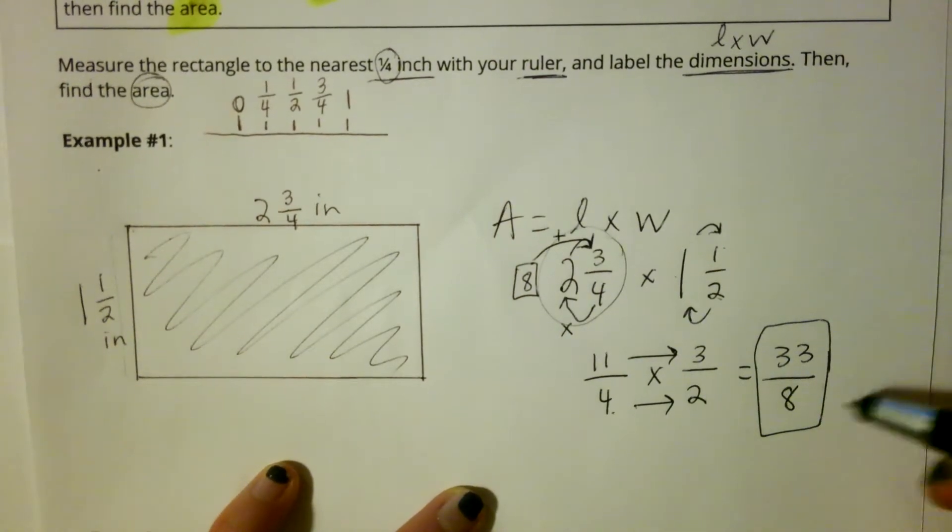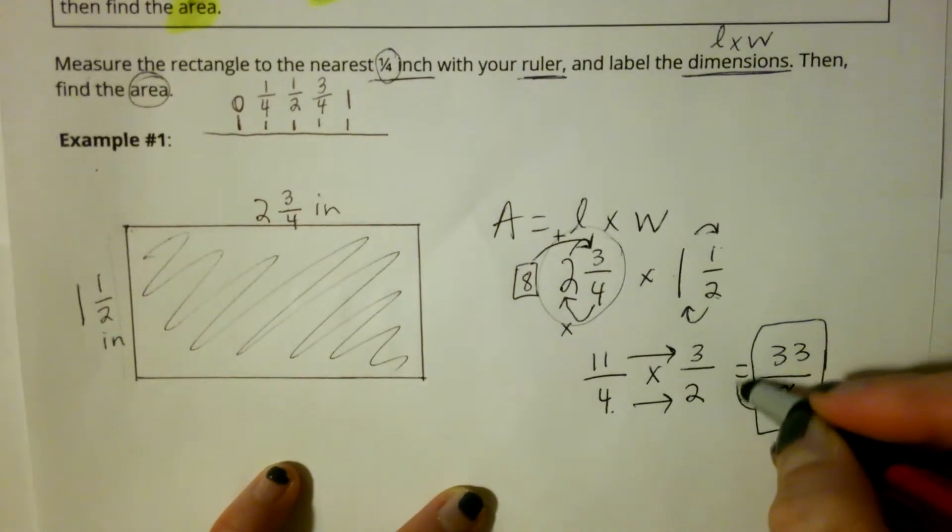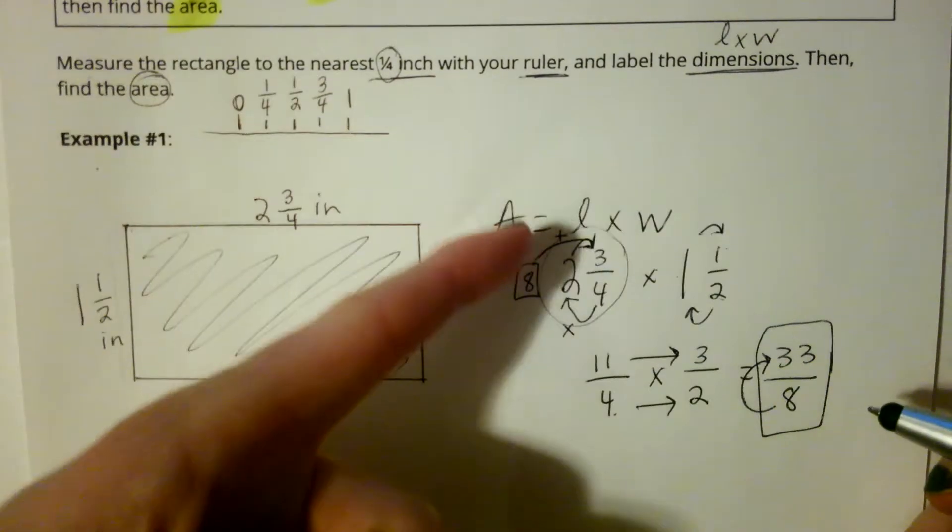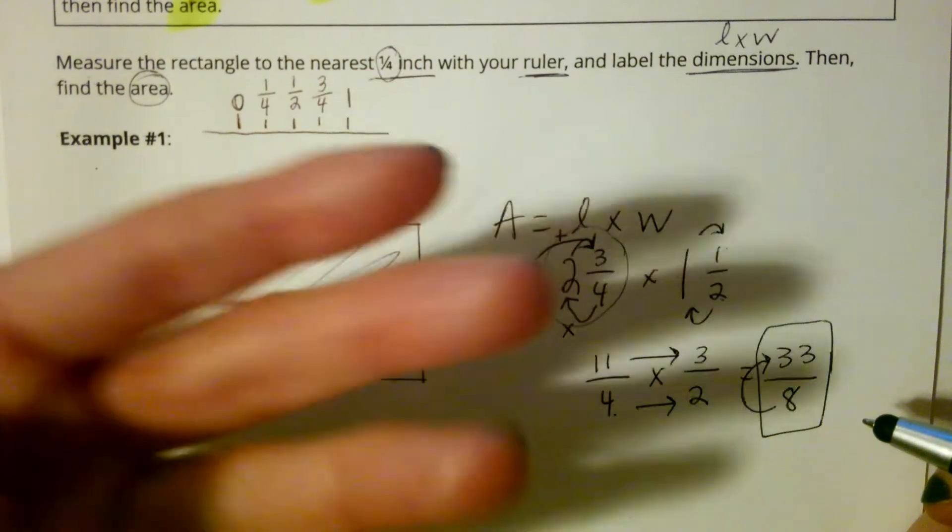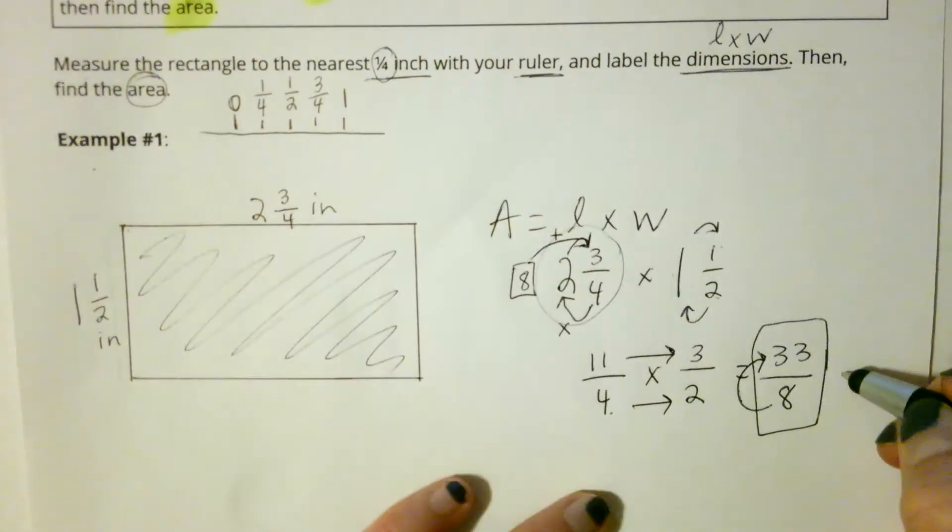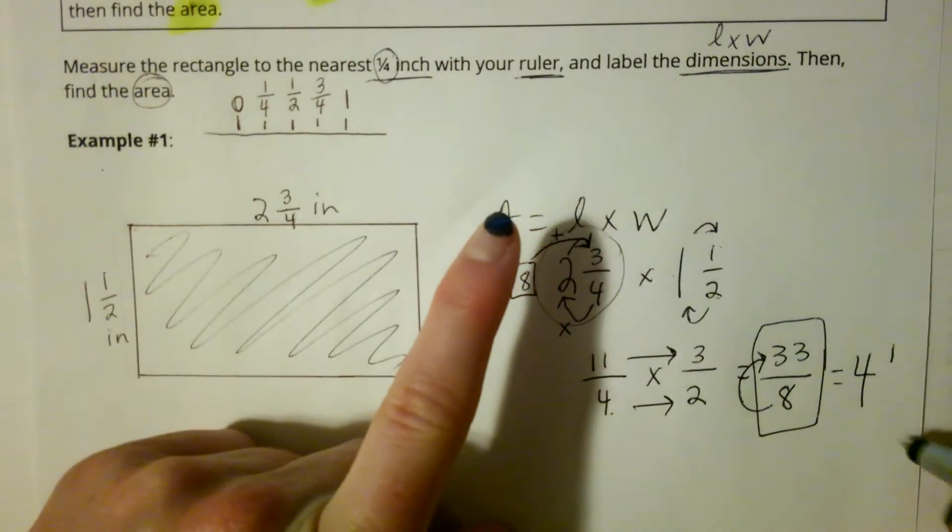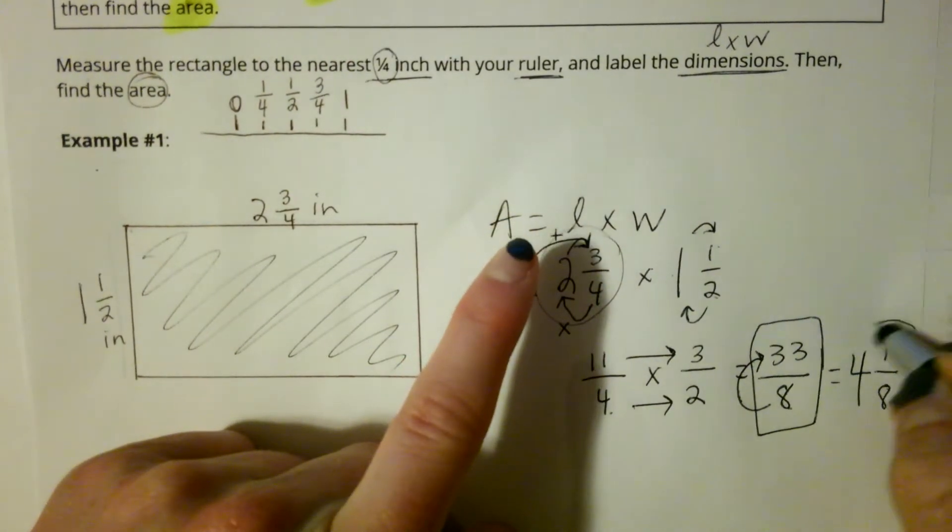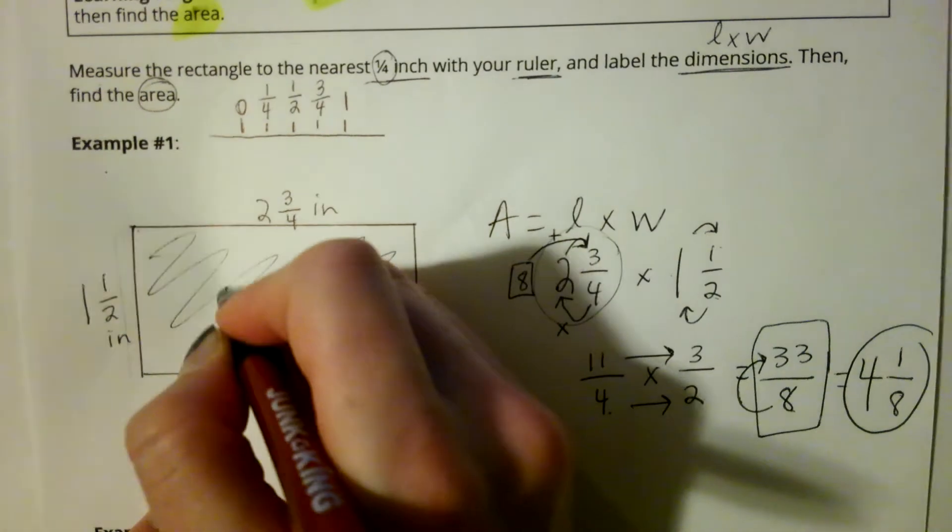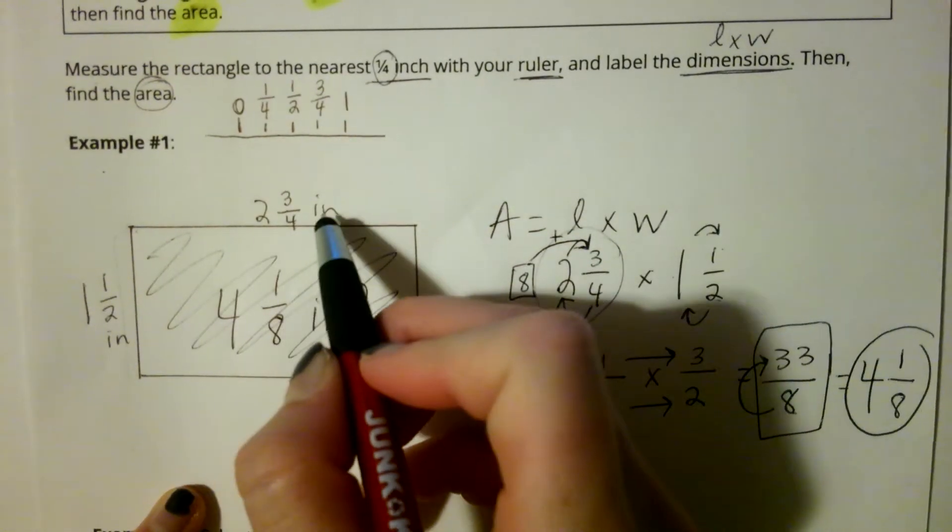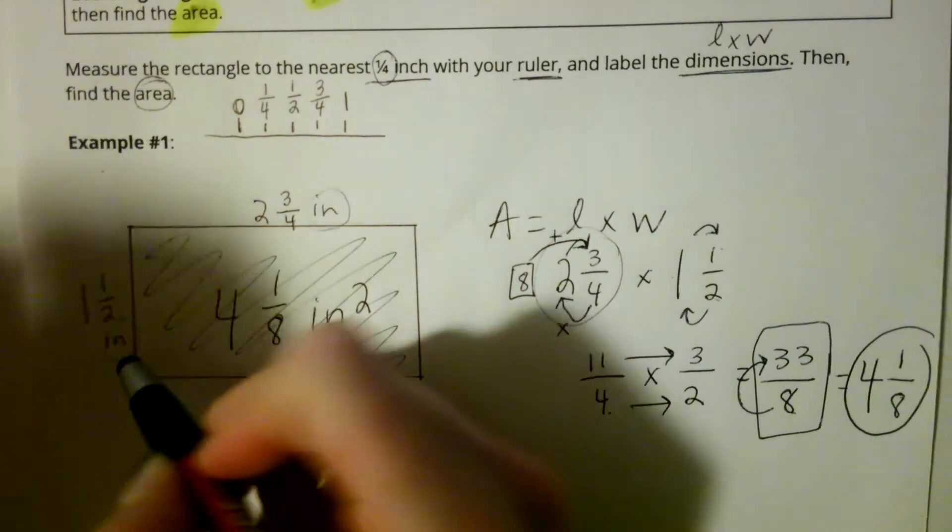This is not my answer yet. That's as an improper fraction, but my eight can go into my numerator. So I'm going to count by eights. Eight, sixteen, twenty-four, thirty-two. So it can go in four times. Thirty-two, thirty-three. I just have one extra to get to thirty-three, and my denominator stays the same. So my area is four and one-eighth inches squared since I'm doing inches times inches.